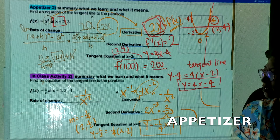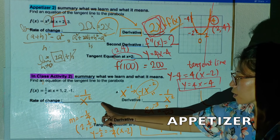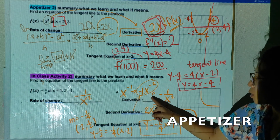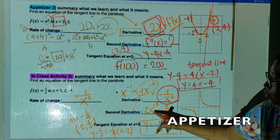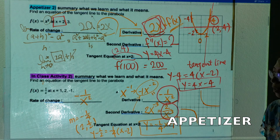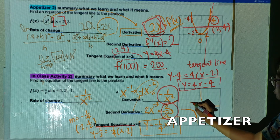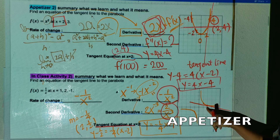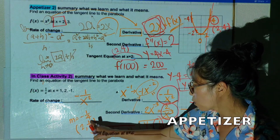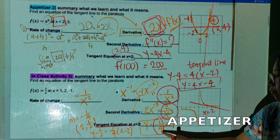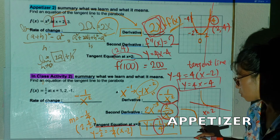Let's compare the in-class activity answers. For rate of change, plug in carefully. If I take the derivative of x to the negative one, I get negative one over x squared. The second derivative: negative two times negative one brings the power down, so I get two over x cubed. For the tangent equation at x equals 2, the slope is negative one-fourth, the point is (2, one-half), and after simplifying I get y equals negative one-fourth x plus one. That's the tangent line.